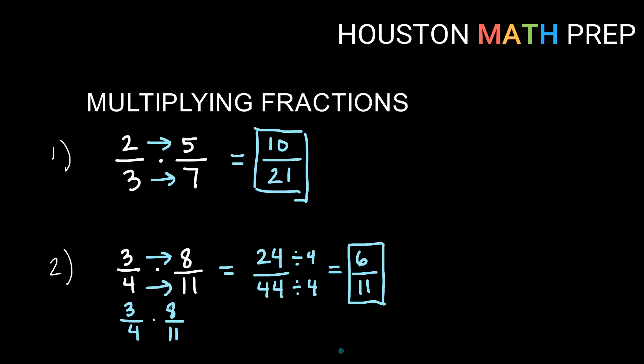So 8 over 4, I can reduce both of these by 4, common factor. So this would become a 2 if I divide by 4, and if I divide this 4 by 4, I get 1. And so now you can see going straight across with these smaller numbers, 3 times 2 on the top will give us 6, and 1 times 11 on the bottom will give us the 11. So you can reduce before you get larger numbers at the end.